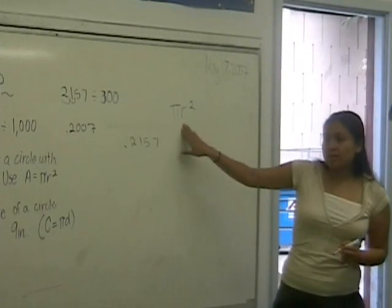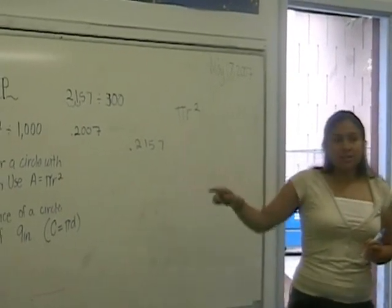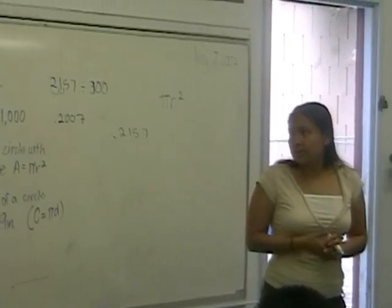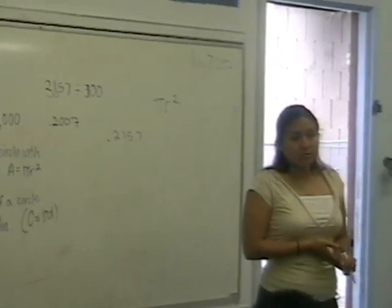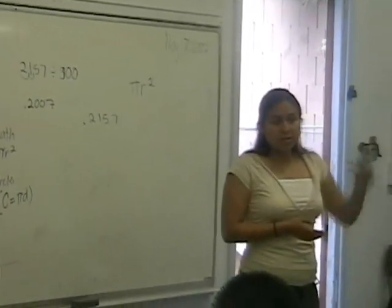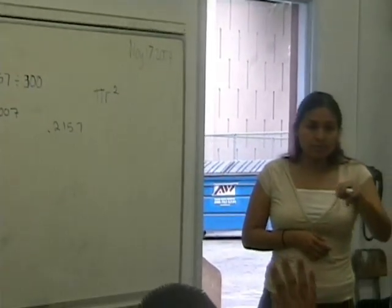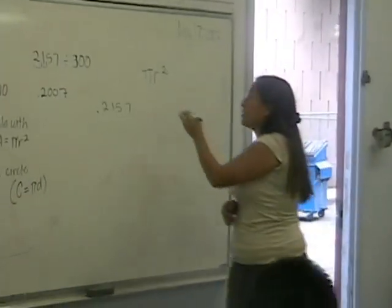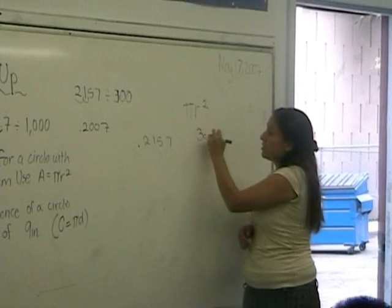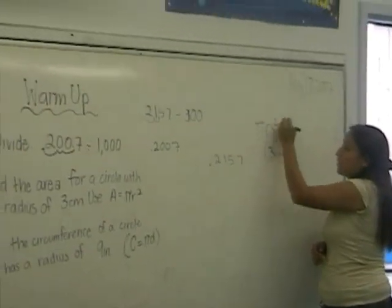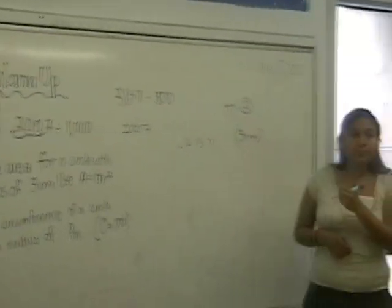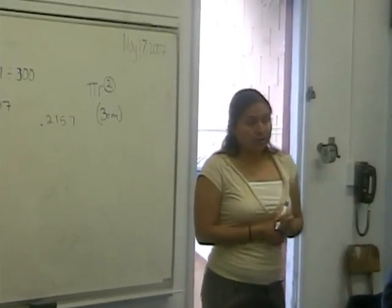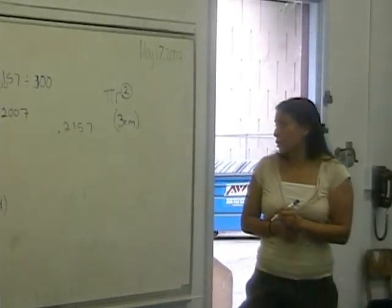Okay, so let's substitute that in. How much is the radius in this equation? Three centimeters. Three centimeters. And what does this mean here? Like the power of the square. Square, right.